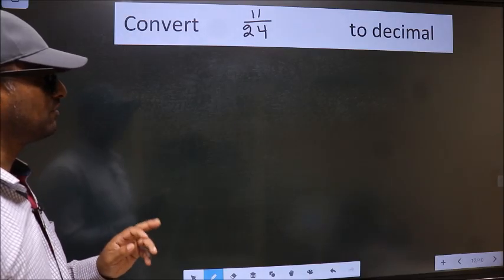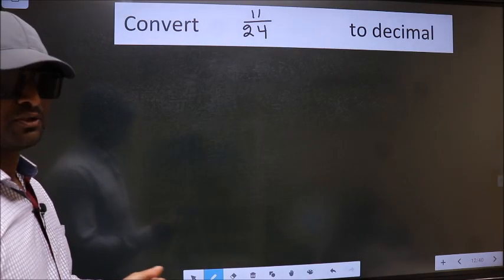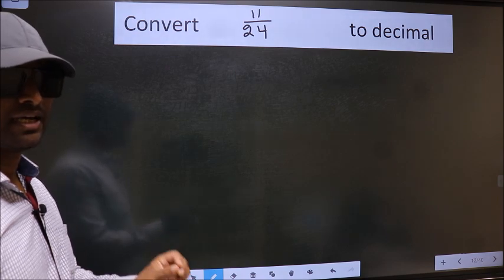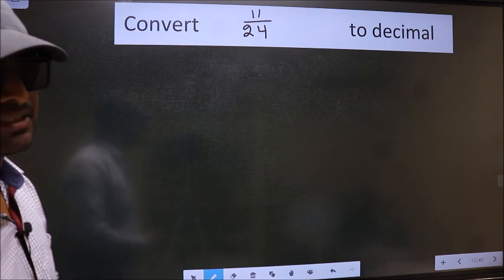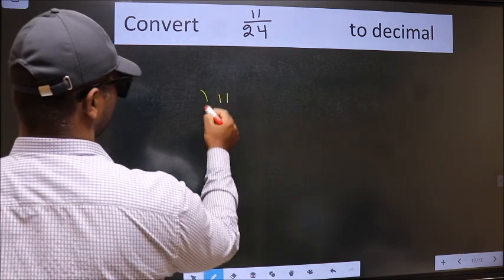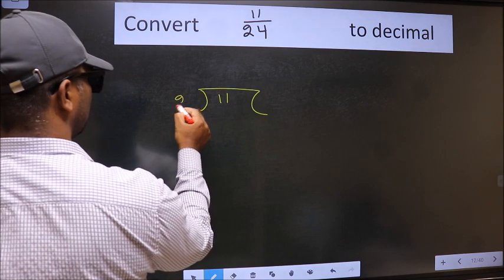Convert 11 by 24 to decimal. To convert to decimal, we have to divide. And to divide, we should frame it in this way: 11 here, 24 here.